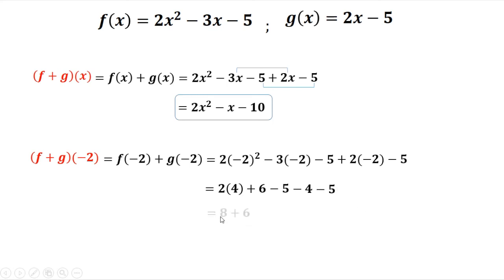Simplify again. 2 times 4 is 8 plus 6. Then you add the same sign: negative 5, negative 4, and negative 5, that's negative 14. So we have 8 plus 6, which is 14, minus 14, that's 0. So the answer is 0.